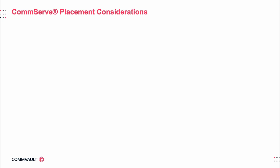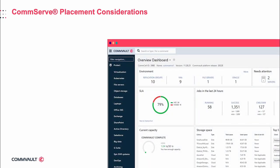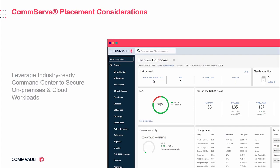No matter what kind of CommServe design you choose — on-premises, in the cloud, or hybrid — it is easy and simple to set up Command Center to protect a wide range of different workloads. Command Center is industry-ready and can support several cloud apps, databases, and object storage repositories, all on major cloud platforms. For the most up-to-date information on supported cloud or on-premise workloads, please refer to the CommVault documentation site.